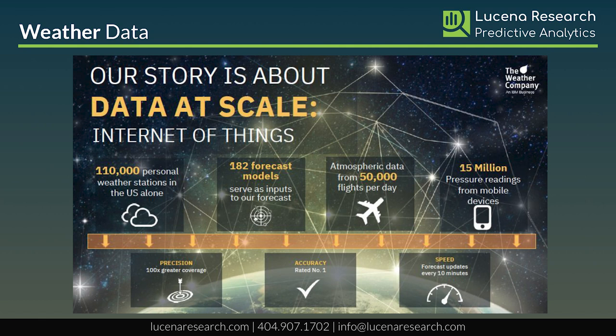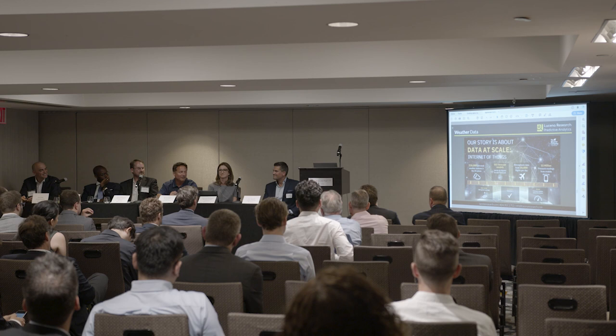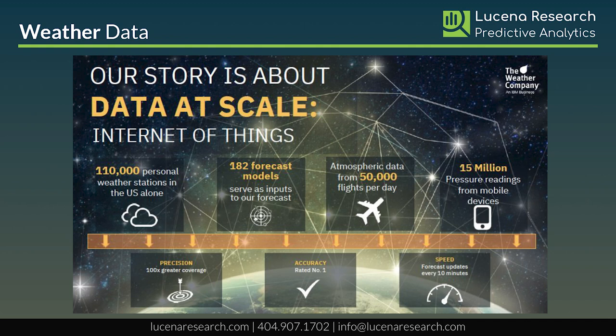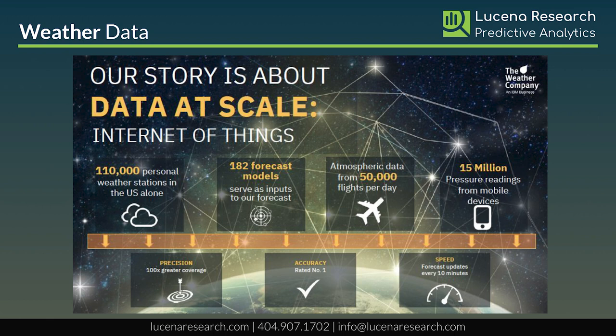Going back a couple of slides, we put a lot into our forecast and data models. We have one of the largest data science teams. We ingest 110,000 personal weather stations from the Weather Underground, which we purchased. All the METARs — those are airports — is what most people make decisions on, but most people are not near the airport, so they're getting the wrong information. We give 182 forecasts in our model: ECMWF, NOAA, and others. People just use NOAA, but they're only one of our 182 inputs. NOAA is a great forecast and a great place for info, but they're just one of them.